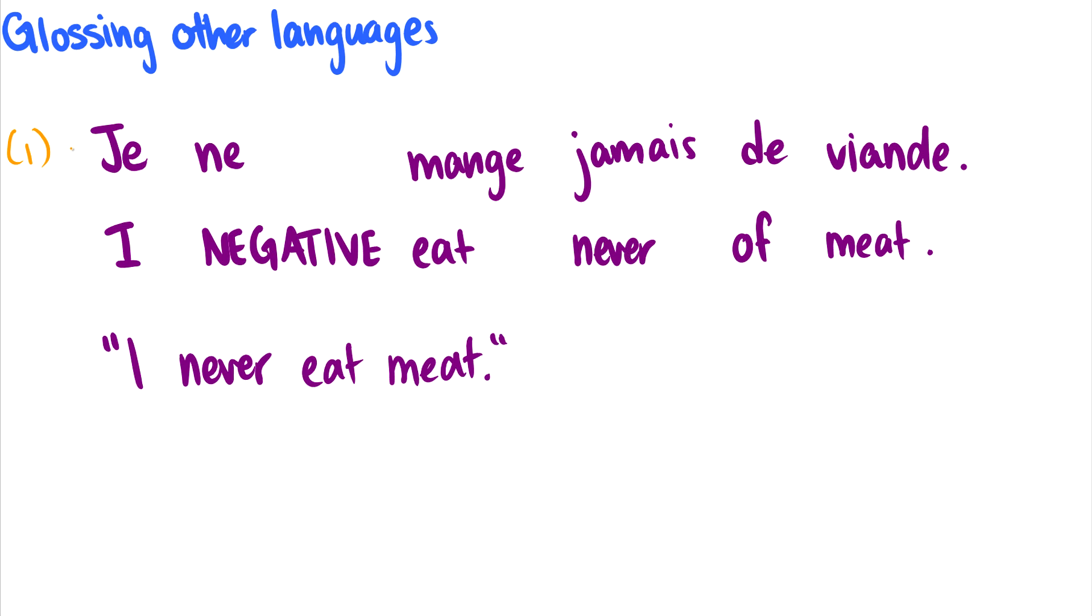First is the literal sentence. So this is French, I cannot pronounce French, so I won't bother. The second line is the gloss, and this is the important part. So in a gloss, the words are always lined up to their meaning. So je is I. Ne is just a negative marker. Okay, mange is eat. And then as we go on, we can see that jamais is never, de is of, and then we have meat.